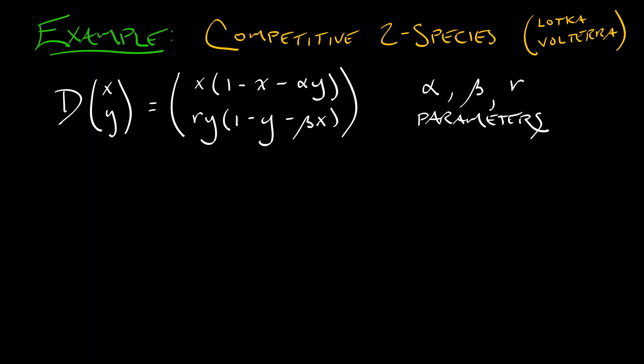Now, r turned out to be a somewhat inconsequential growth rate parameter, but alpha and beta, the sensitivities of one population with respect to the size of another, those were really important.